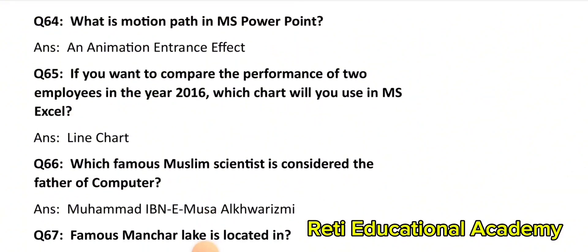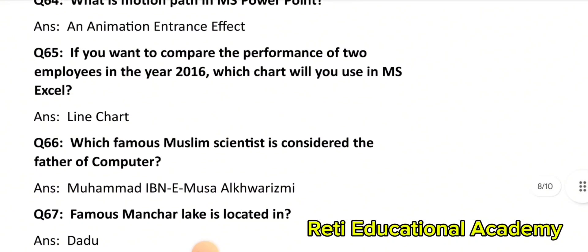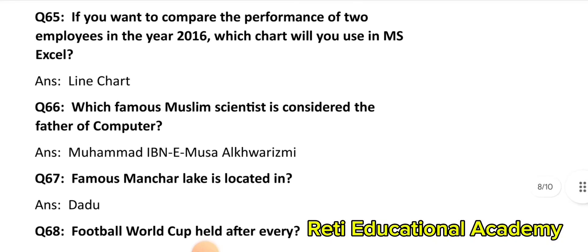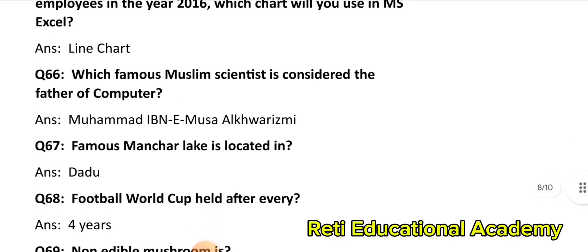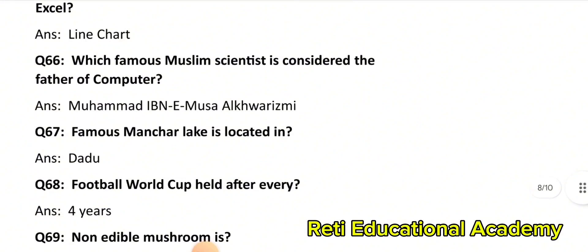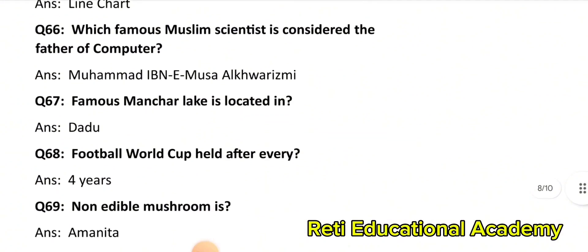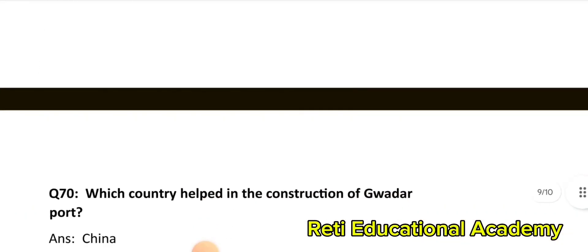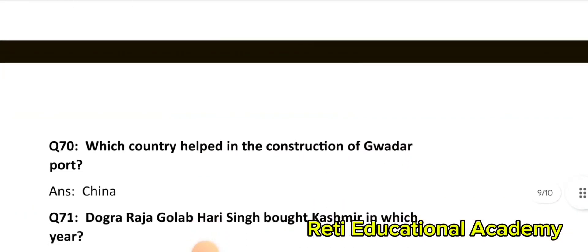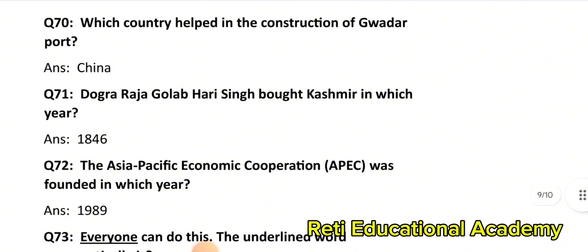Question number 67: Famous Manchar Lake is located in District Dadu. Question number 68: Football World Cup is held after every four years. Question number 69: Non-edible mushroom is Amanita. Question number 70: Which country helped with the construction of Gwadar Port? The correct answer is: China. Question number 71: Dogra Rajas Golab and Hari Singh bought Kashmir in which year? 1846. Question number 72: The Asia-Pacific Economic Cooperation was founded in which year? 1989.